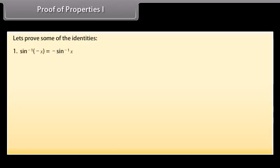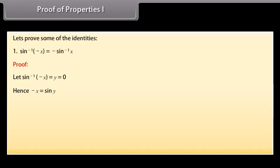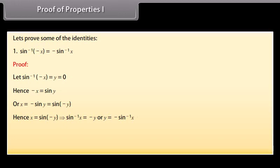Proof of Properties 1: Prove sin⁻¹(−x) = −sin⁻¹x. Let sin⁻¹(−x) = y. Hence, −x = sin y, or x = −sin y = sin(−y). Hence, sin⁻¹x = −y, or y = −sin⁻¹x. Therefore sin⁻¹(−x) = −sin⁻¹x. Similarly, tan and cosec can also be proved.